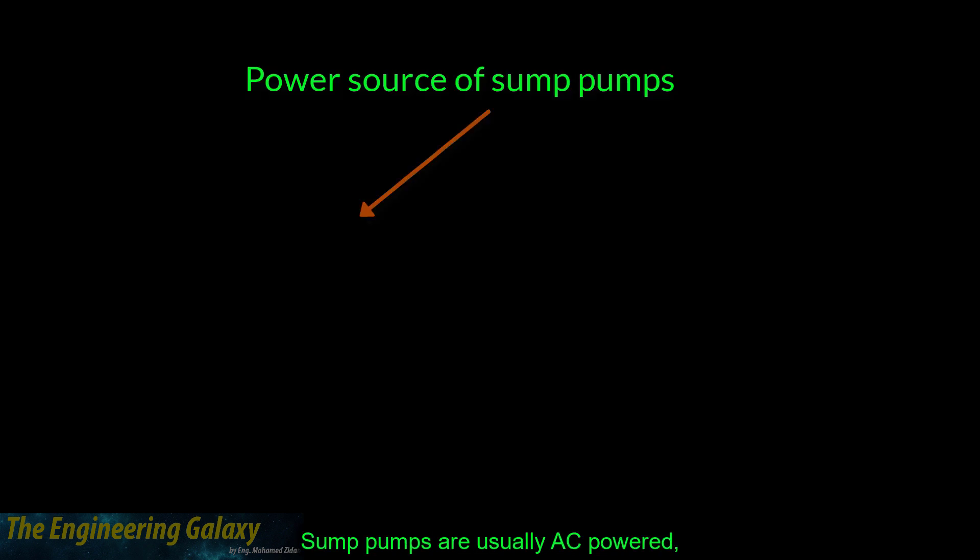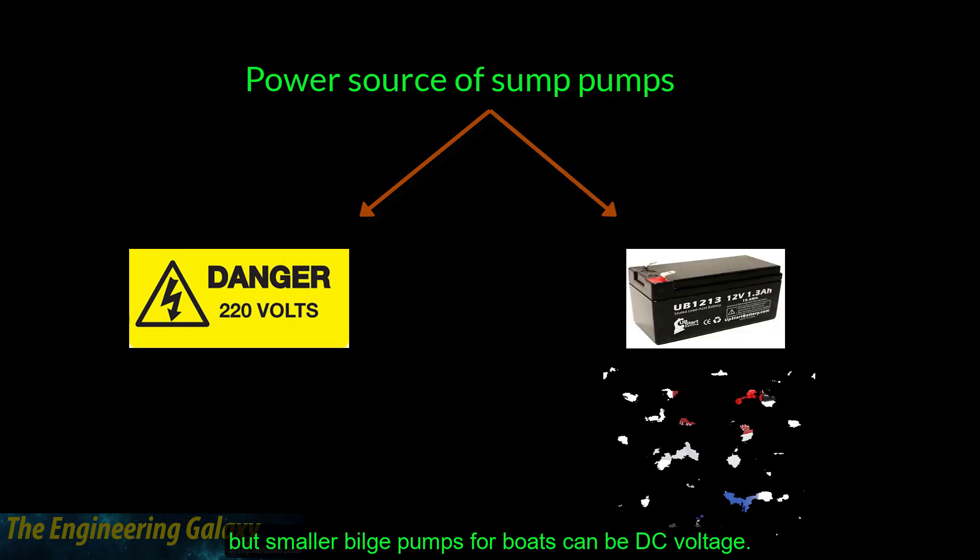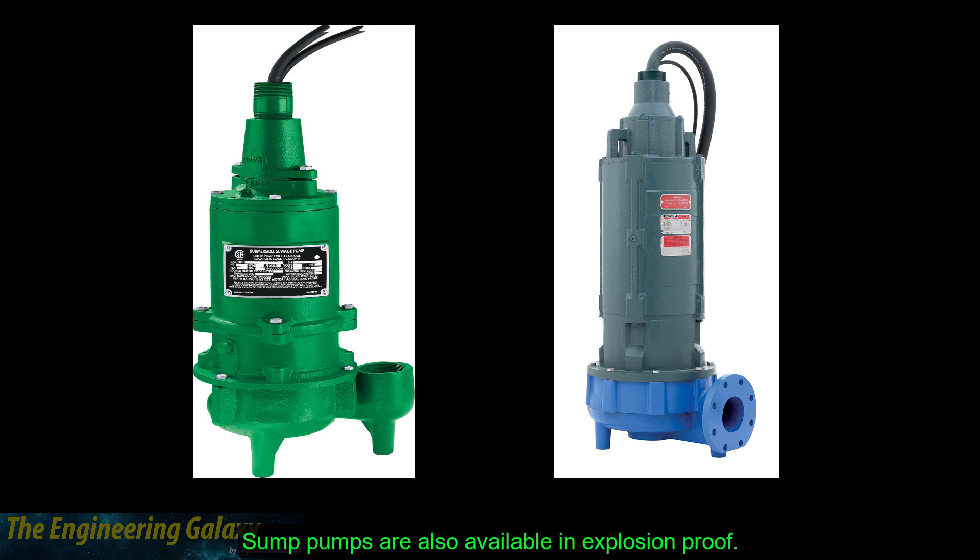Sump pumps are usually AC powered, but smaller bilge pumps for boats can be powered by DC voltage. Sump pumps also are available in explosion proof.